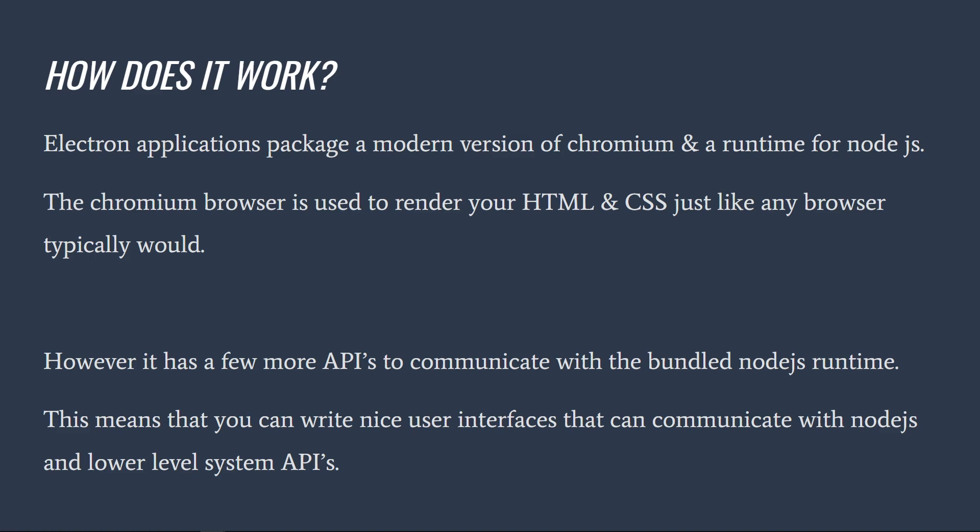Basically what this means is we have a runtime which has access to Node-specific stuff, like the file system. There are also built-in APIs that allow us to access operating system-specific features like dialog boxes. And then we have Chromium, which is basically a Chrome browser stripped of all the Google stuff and left with just the basics for rendering HTML, CSS, and JavaScript.